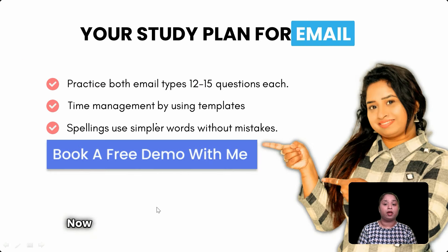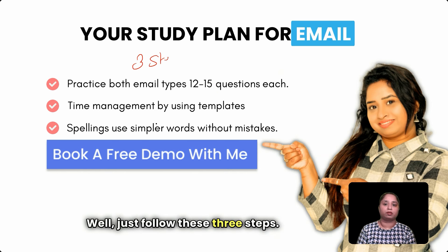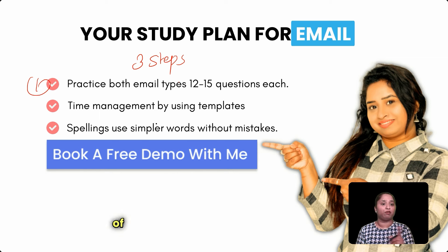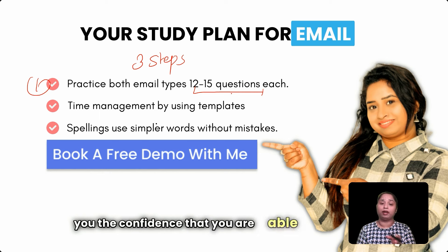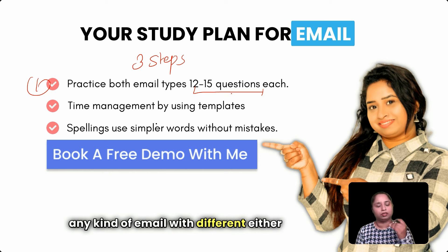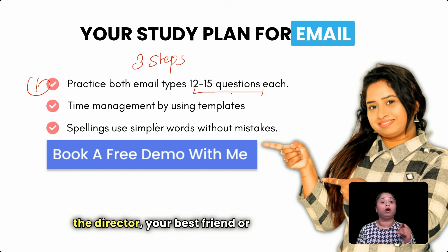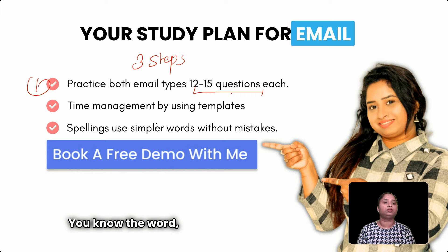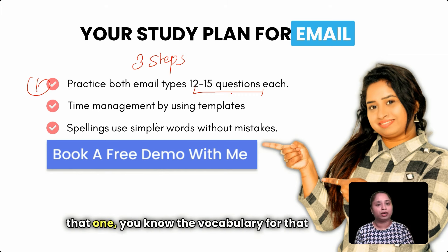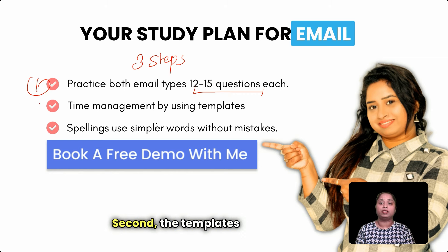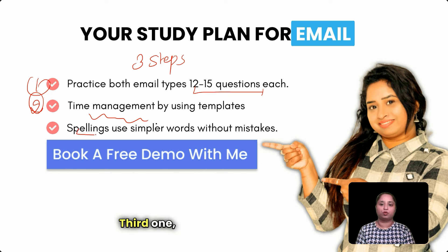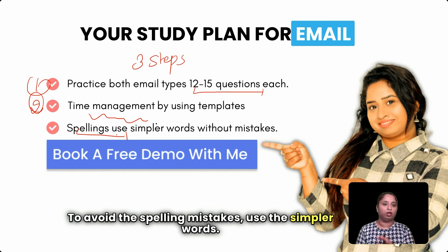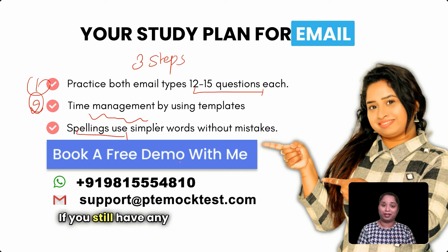Sometimes students ask for a study plan for email writing. Follow these three steps. First, practice both types of emails — formal and informal — at least 12 to 15 questions. This builds confidence for any kind of email. Second, use the templates to manage your time effectively. Third, to avoid spelling mistakes, use simpler words — there's no need for high-level vocabulary. If you still have doubts, book a free demo — the details are on the screen.